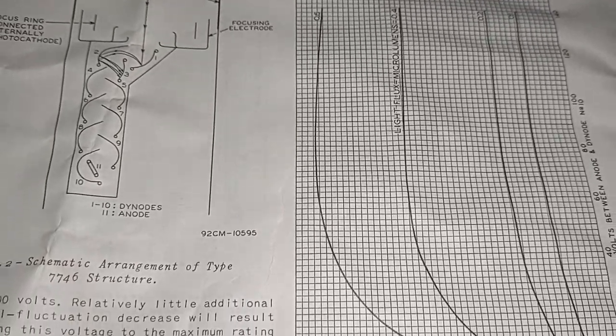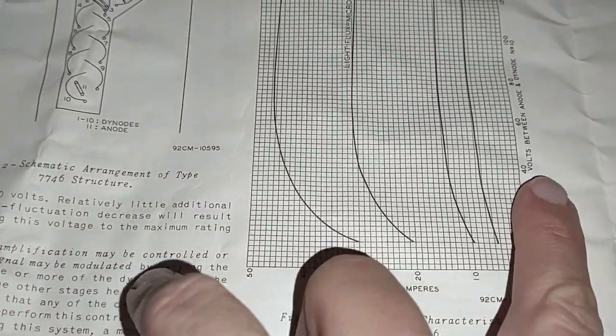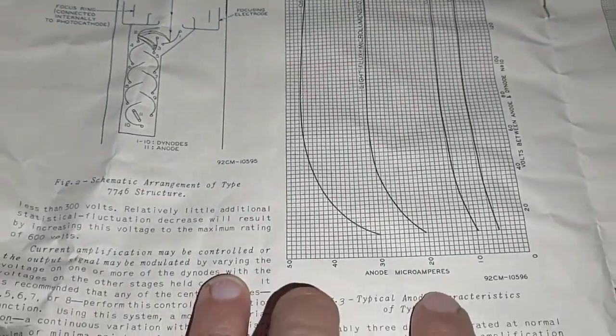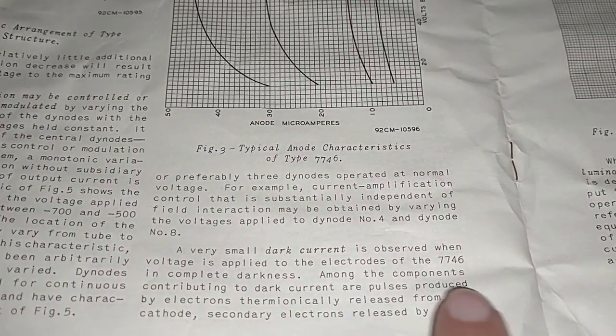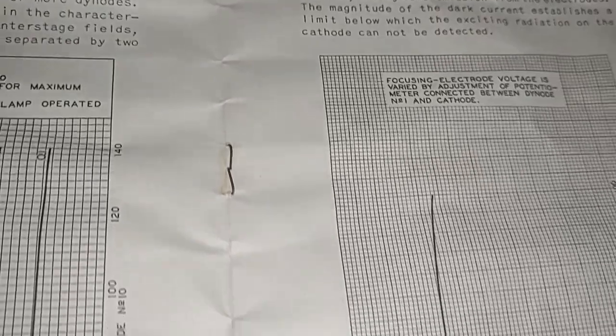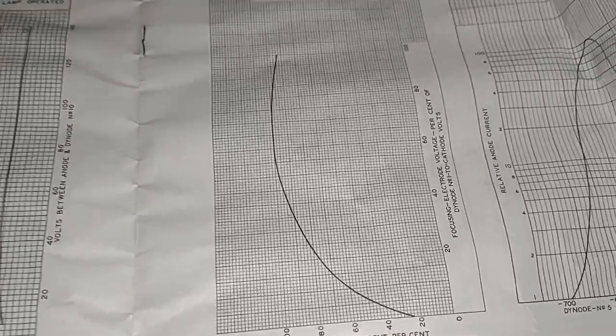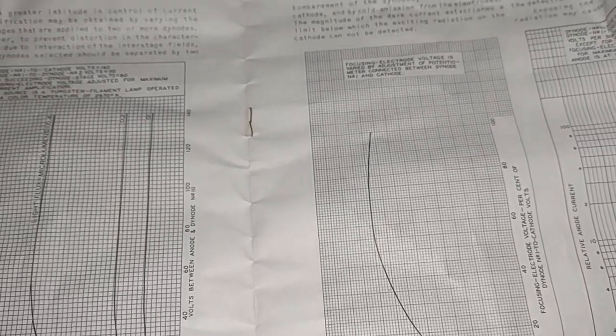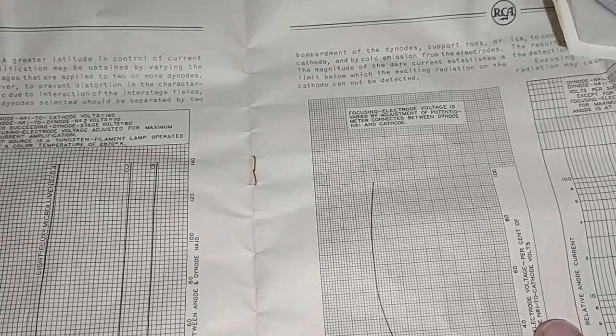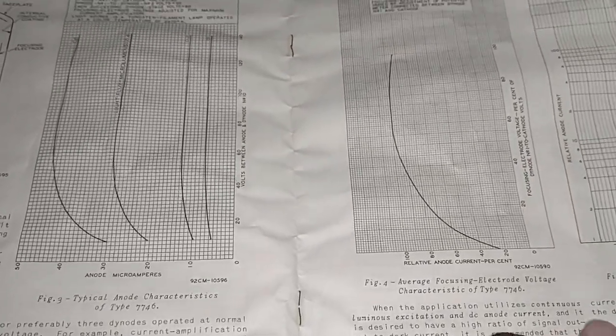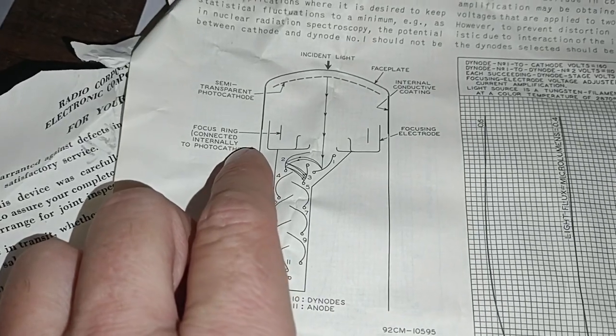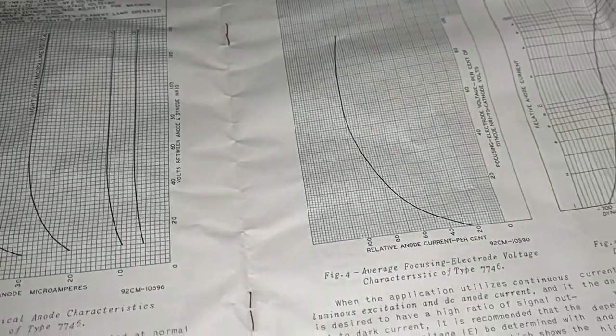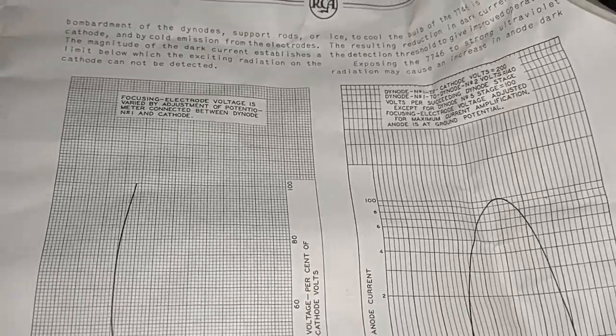Anode microamps versus volts between anode and dynodes. So it tells you how much current you're going to draw versus voltage. Very small dark current is observed. Here's another graph. Oh, this is back when they used to do graphs by hand. This is so exciting, isn't it? Relative anode current percent, focus electrode voltage percent. So the focus electrode here focuses the beam, but when you focus it more it decreases the beam current, as in most electron tubes, if you work on electron tubes, which I do.